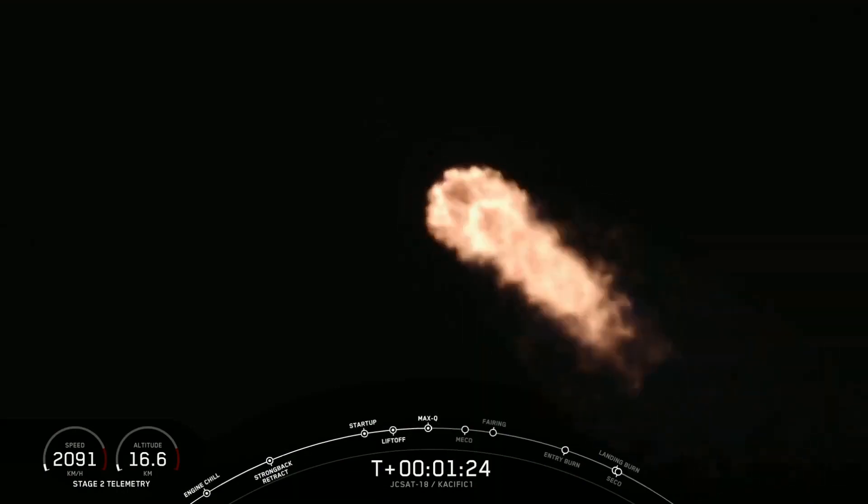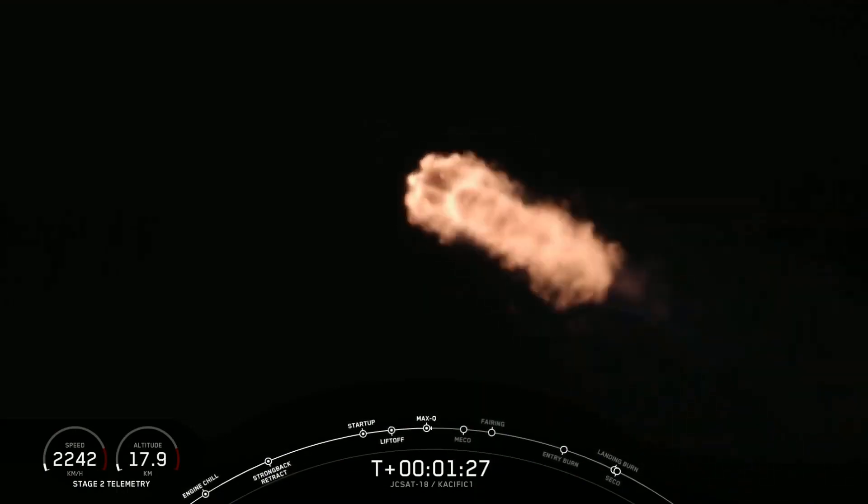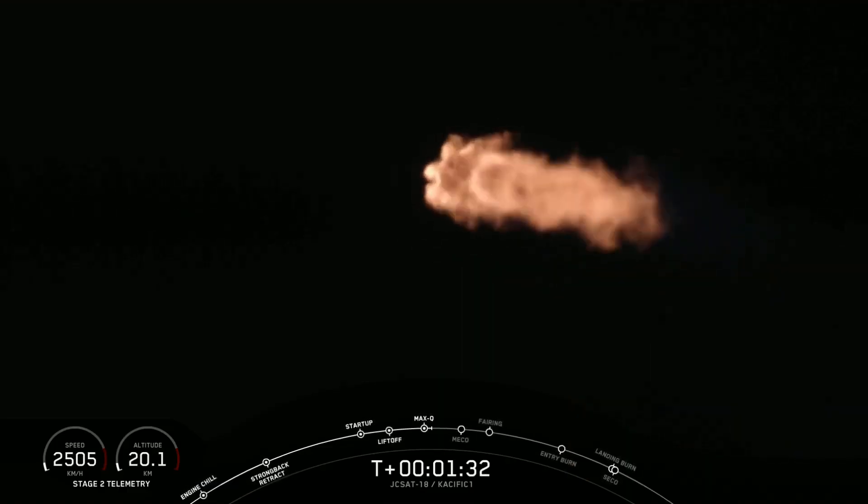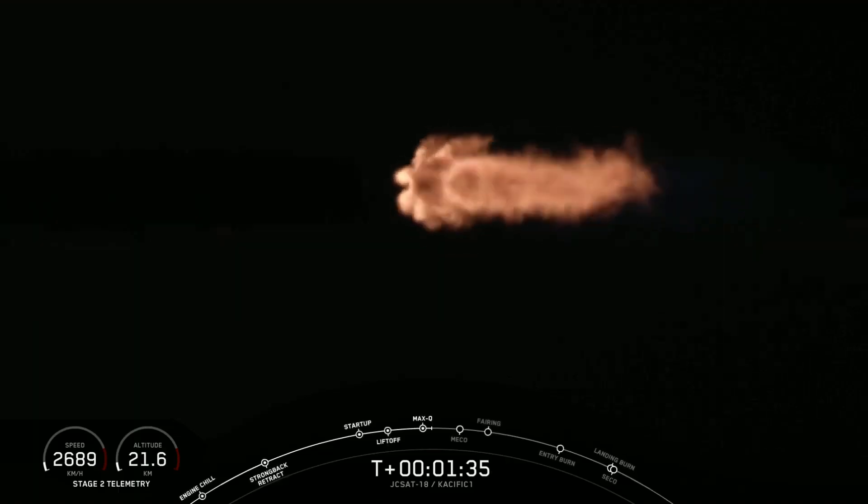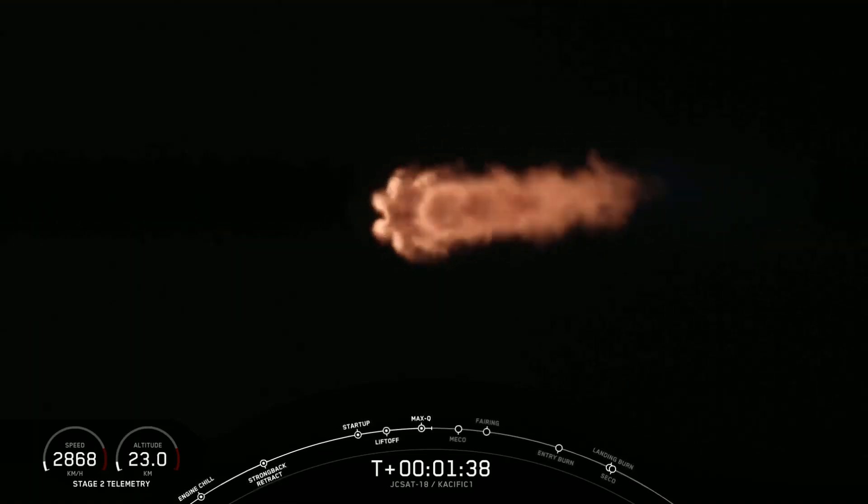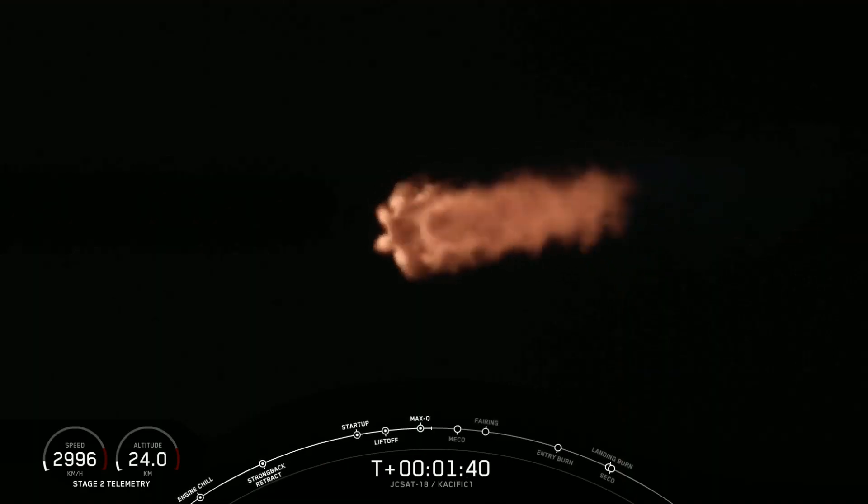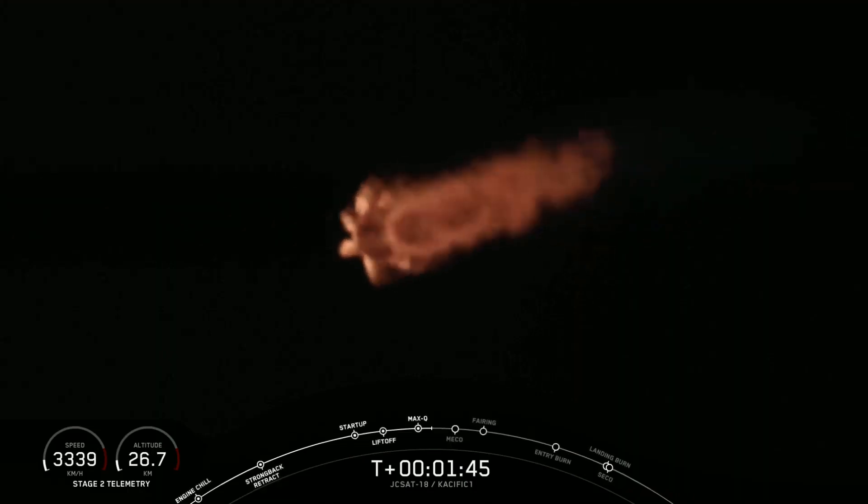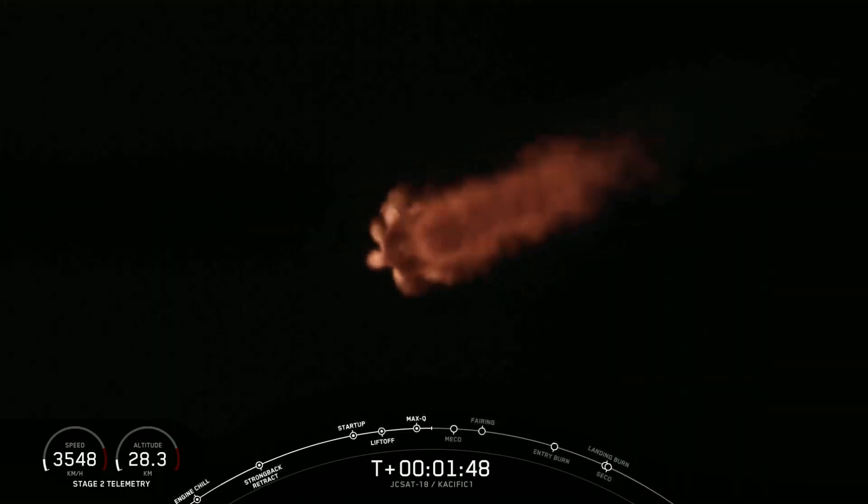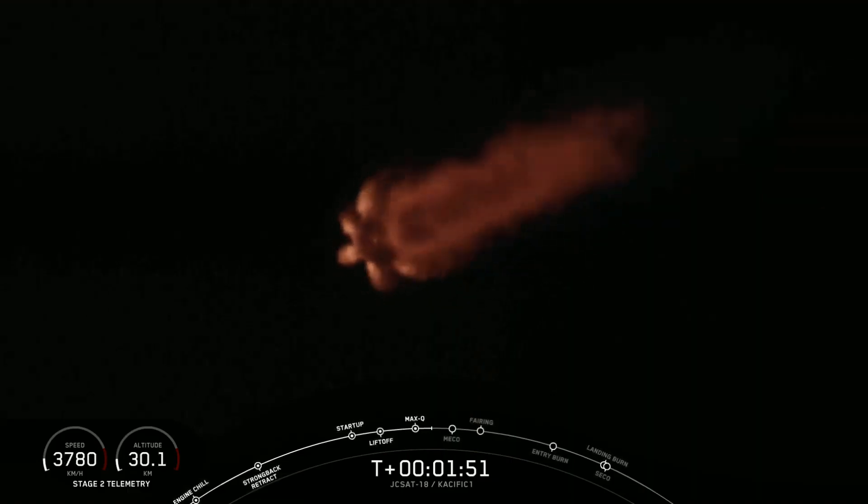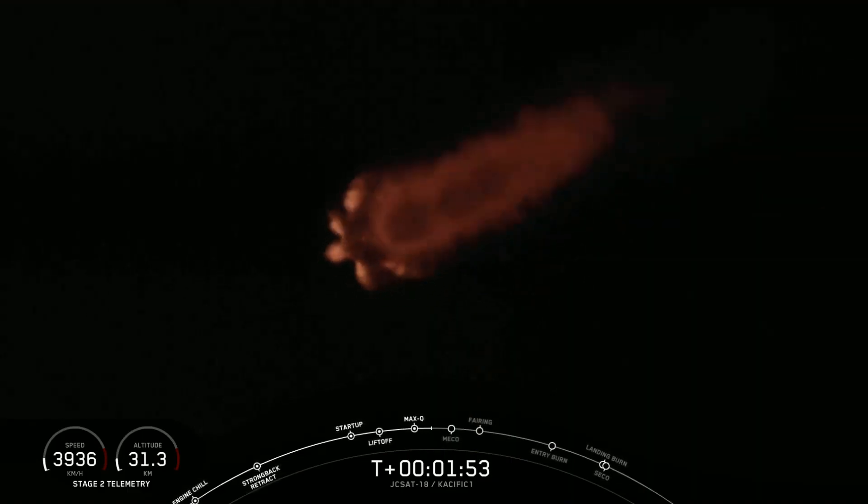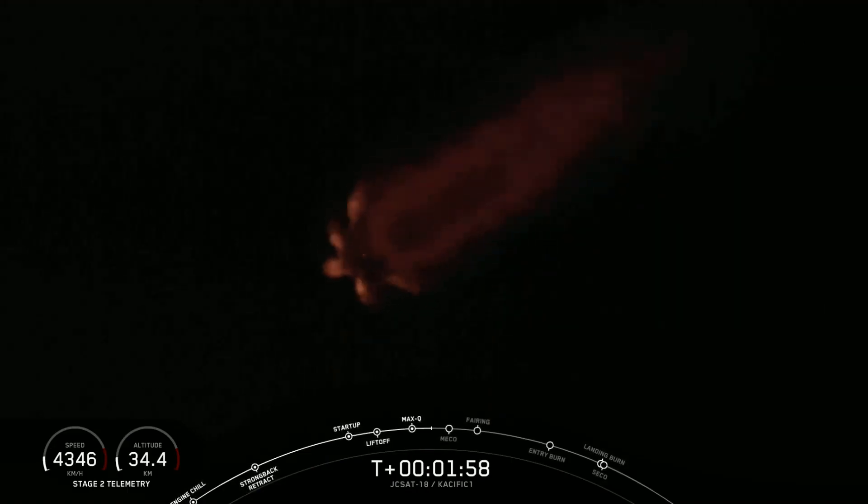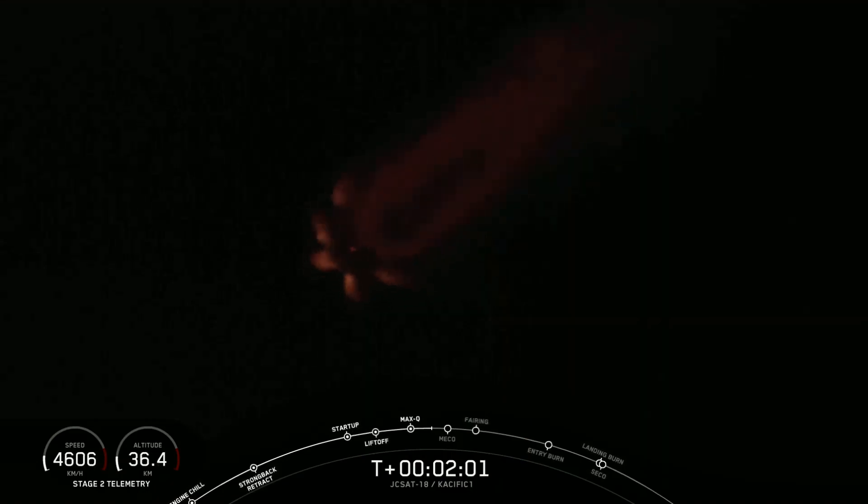The next three events will be in rapid succession: main engine cutoff, stage separation, and second engine start. MECO is where all nine engines of Falcon 9 first stage shutdown. MECO will be followed by stage separation of the first and second stages, then second engine start where we'll light the Merlin vacuum engine on the second stage to carry the satellite to its target orbit.